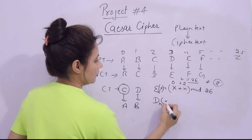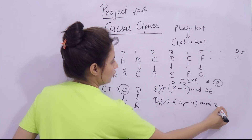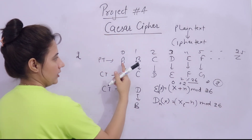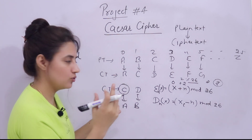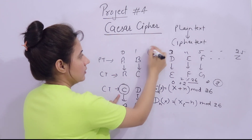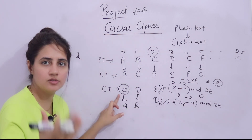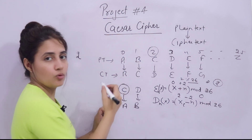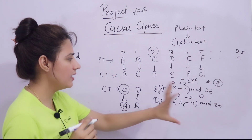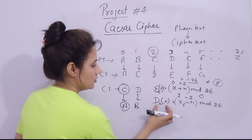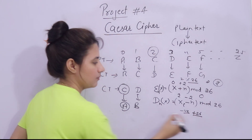For decryption, the formula is (X - N) mod 26 — same as encryption but with minus instead of plus. If 'a' becomes 'c' with shift key 2, then at decryption: position of 'c' is 2, minus N which is 2, gives 0. 0 mod 26 = 0, and at index 0 we have 'a'. So at decryption 'c' becomes 'a'. If this value becomes negative, we simply add 26 to the number.